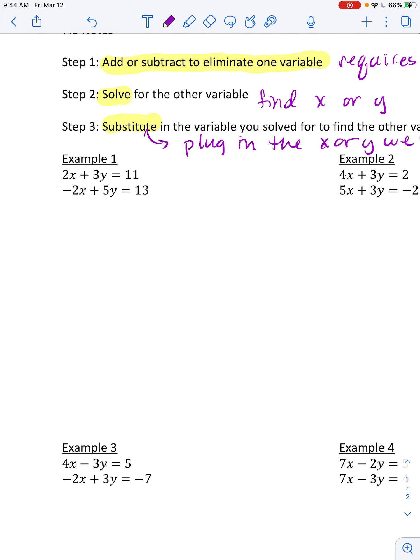So we're going to first start with step one, add or subtract. So I draw a big fat line under these two. And then I literally look here and say positive 2x, negative 2x, those eliminate. Positive 3y, positive 5y, that makes 8y. 11 and 13, they're both positive. So I'm just adding them together and I get 24. So I've done step one. I added or subtracted these two equations.